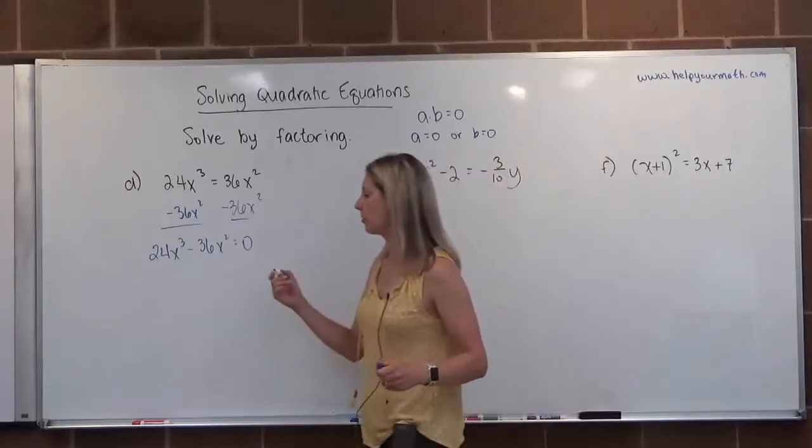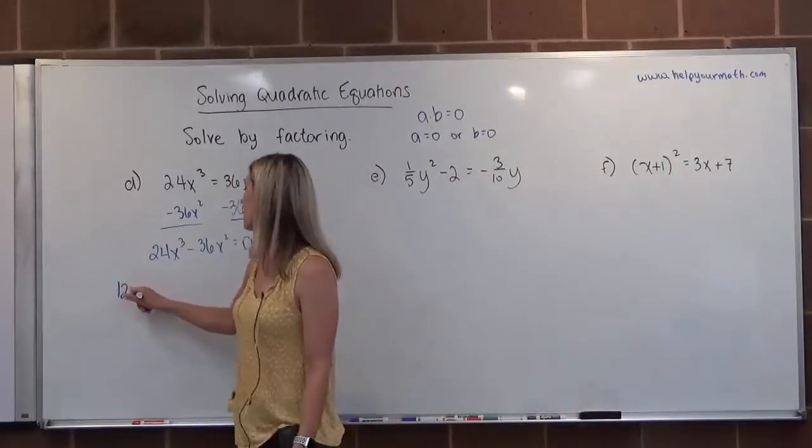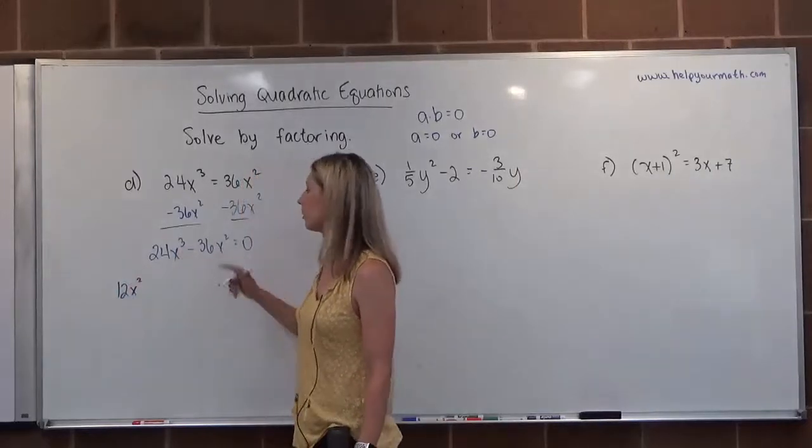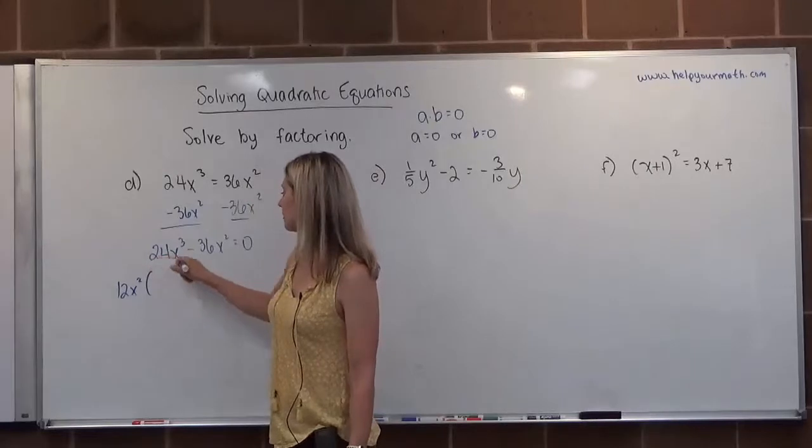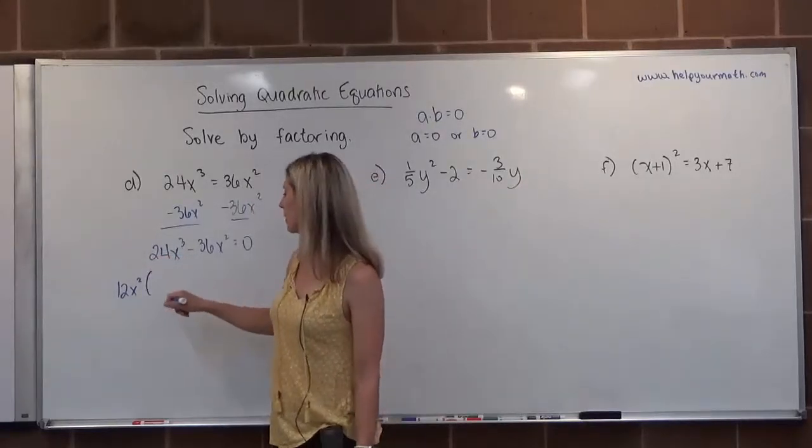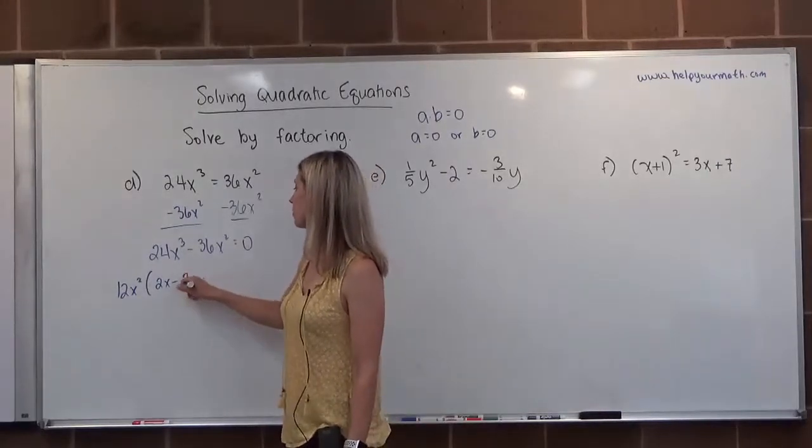24 and 36 are both divisible by 12, and x cubed and x squared are both divisible by x squared. Remember we take the smallest exponent. When I divide 24x cubed by 12x squared I end up with 2x. 36x squared divided by 12x squared would be 3.